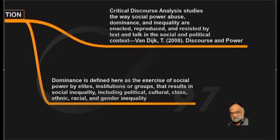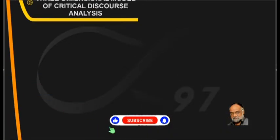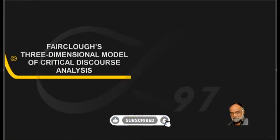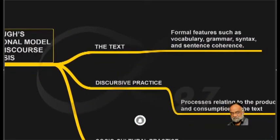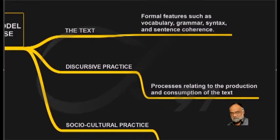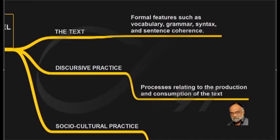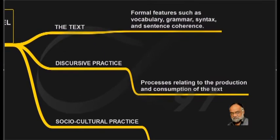Now let's look at Fairclough's three-dimensional model of CDA. Three-dimensional simply means that it is in three parts, or it has three angles to it. First, just look at the screen, where it says that one dimension is the text, the second dimension is discursive practice, and the third is socio-cultural practice.